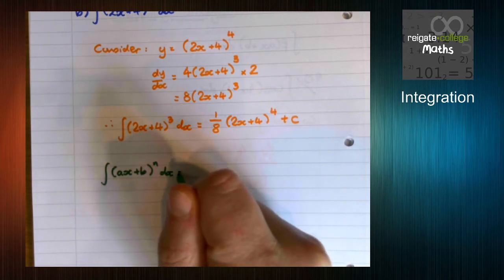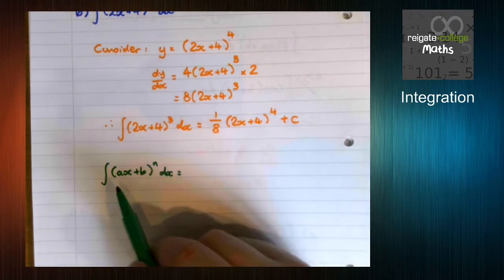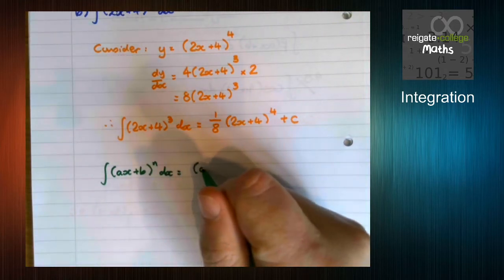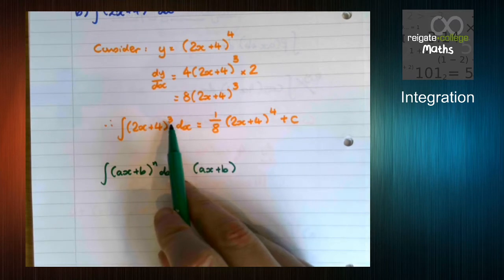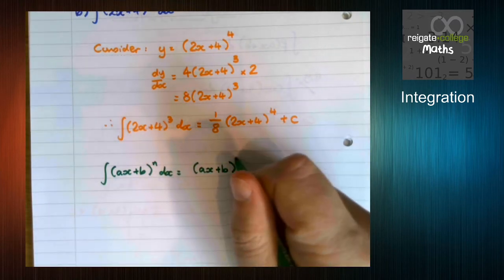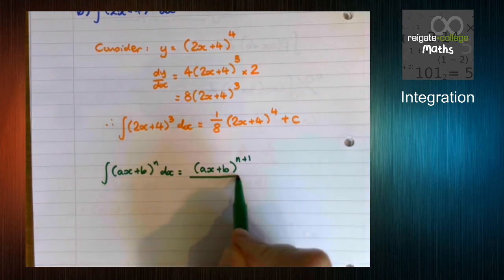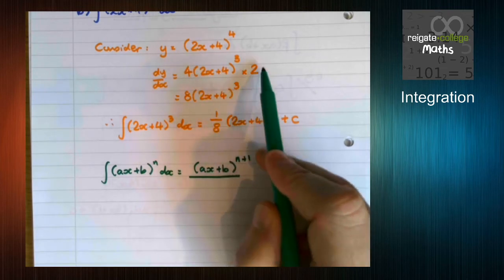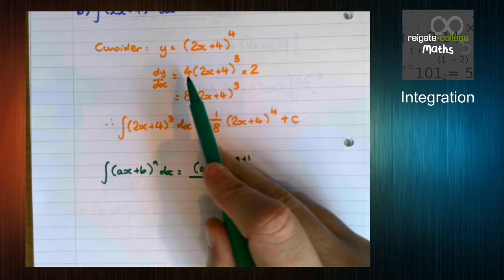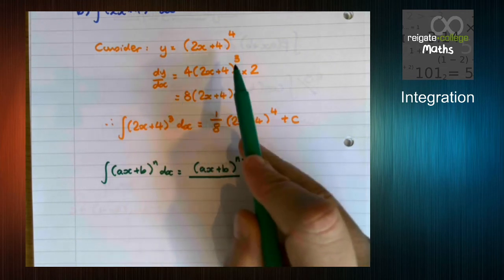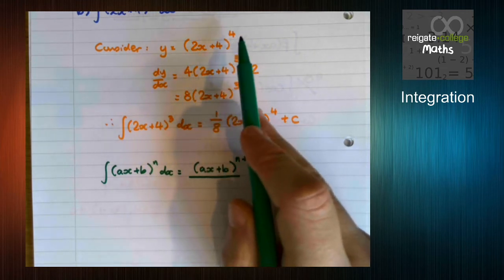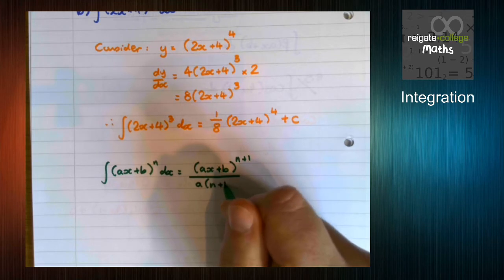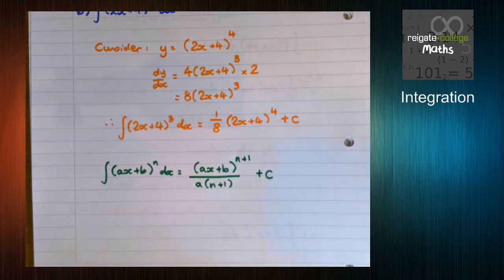If we're integrating ax plus b to the n, you can see the bracket stays there. The power increases by 1, and then where did this 1 over 8 come from? Well, that's the derivative of the bracket times the new power. So in this case, it's going to be a times n plus 1, then plus c on the end.